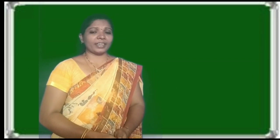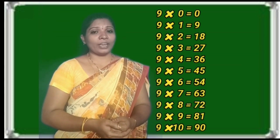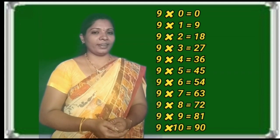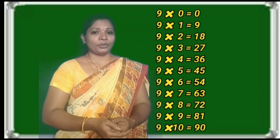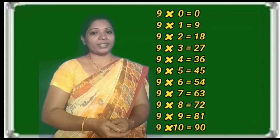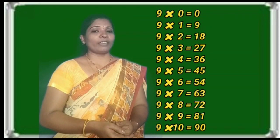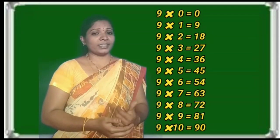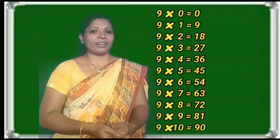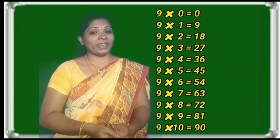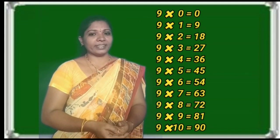Let us revise the 9 table once. 9 0's = 0. 9 1's = 9. 9 2's = 18. 9 3's = 27. 9 4's = 36. 9 5's = 45. 9 6's = 54. 9 7's = 63. 9 8's = 72. 9 9's = 81. 9 10's = 90.